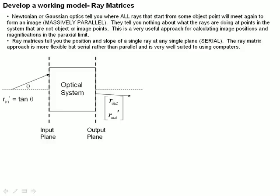Ray matrices, on the other hand, tell the position and slope of a single ray at any single output plane of a system, as long as we can define the system. And we'll see how to do that in a couple of minutes.